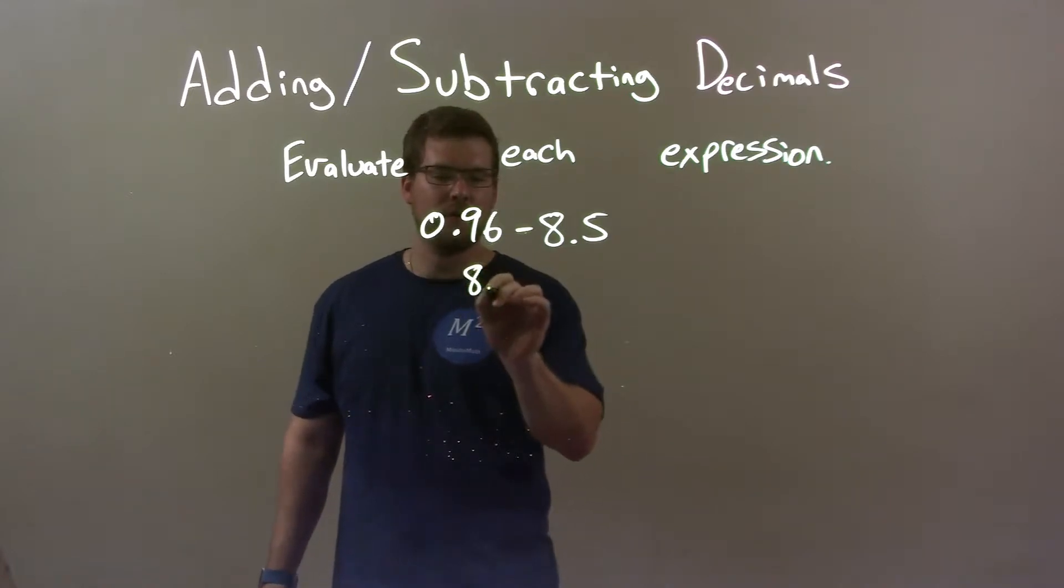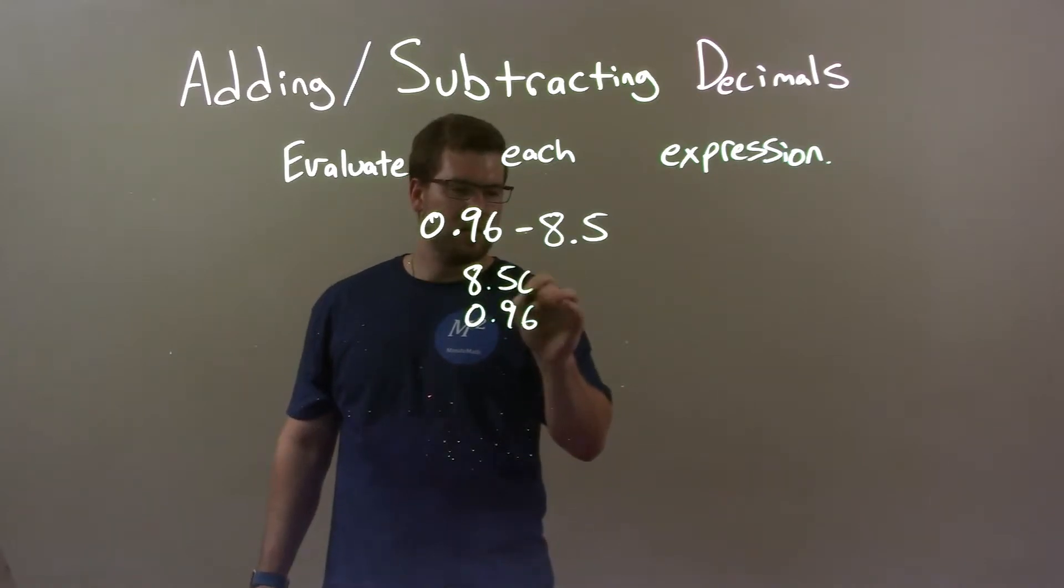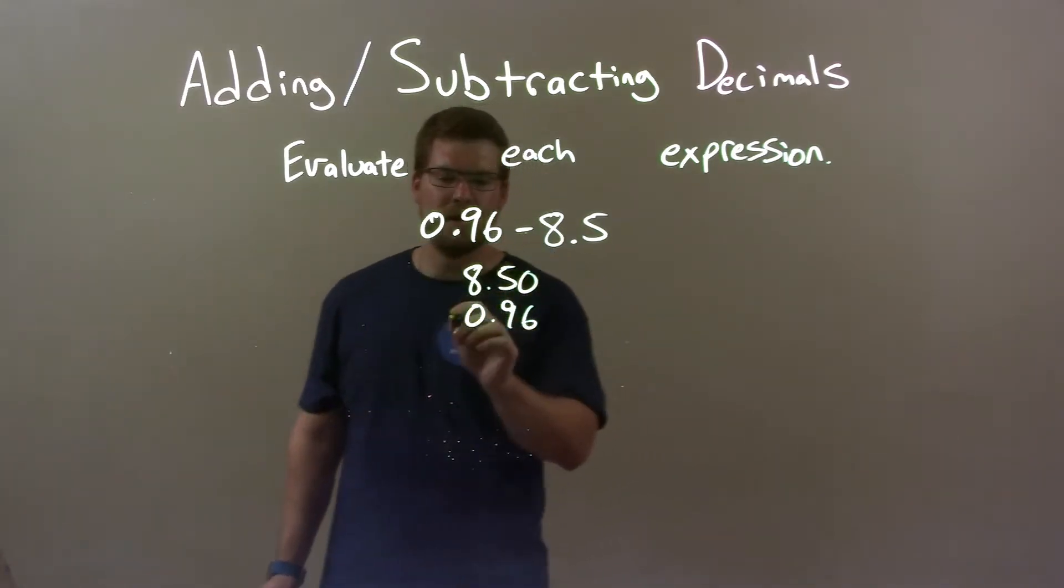So 8.5 is larger, so that's first, and we have 0.96. I'm going to put a zero at the 5 to make sure it's lined up, and now we subtract the two. Find the difference.